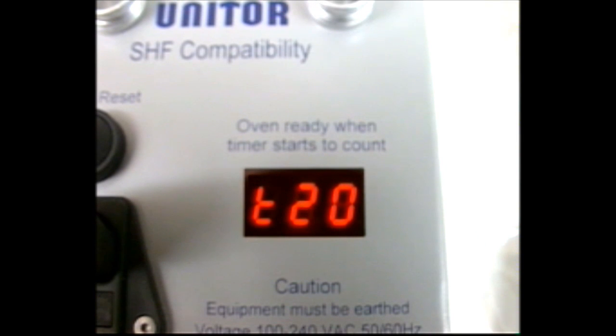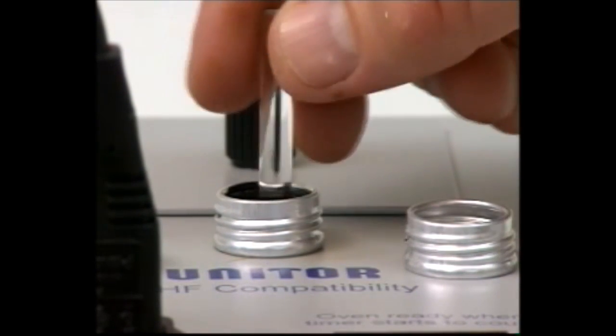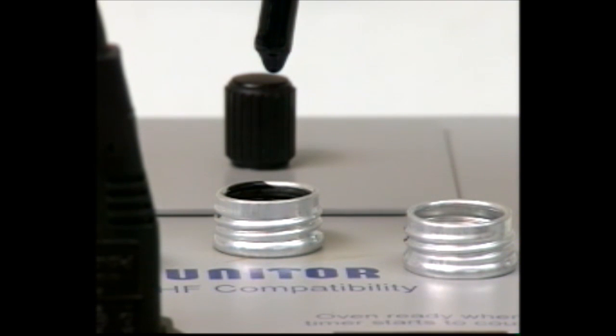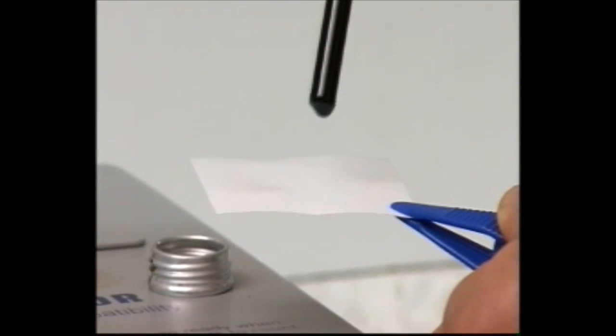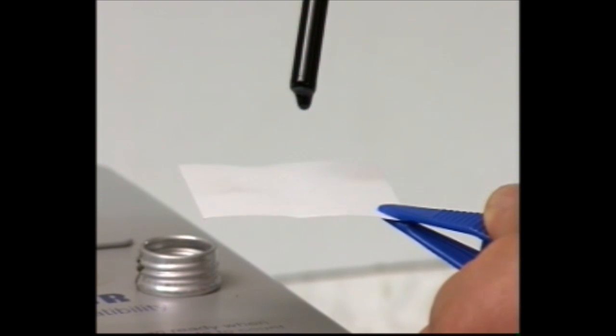Have some test paper ready. Stir the oil with the rod provided for five seconds, then remove it without touching the sides of the sample tube. Let the first drop fall back into the tube and direct the second drop so that it falls onto the center of the test paper.